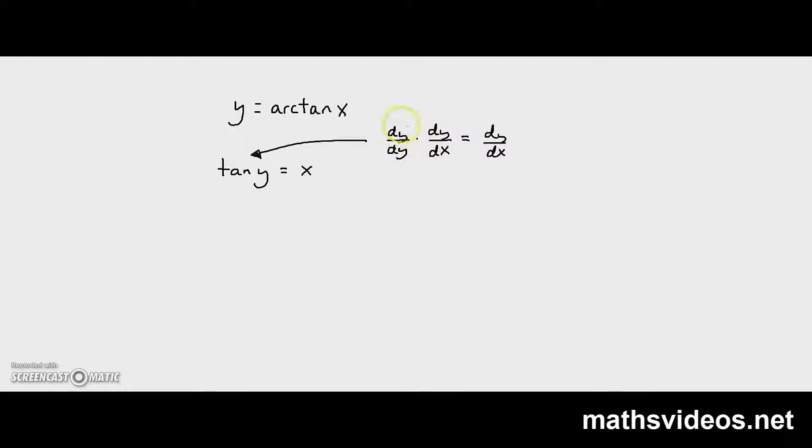Now, dy over dy, in this case, is actually going to be sec y squared. And on this side of this equation, we are going to multiply this by dy over dx.